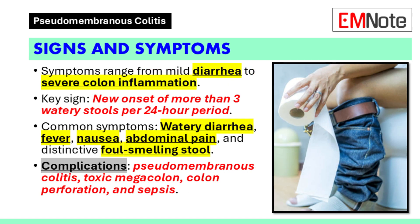Signs and symptoms: Symptoms of Clostridium difficile infection range from mild diarrhea to severe life-threatening inflammation of the colon. Common symptoms include watery diarrhea, fever, nausea, and abdominal pain. A key sign is new onset of more than three partially formed or watery stools per 24-hour period. Stool may have a distinctive foul odor.